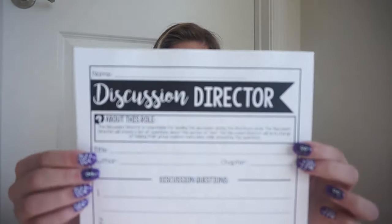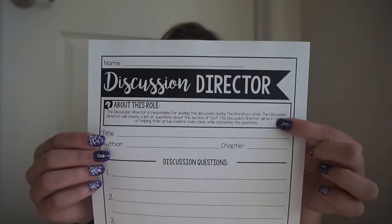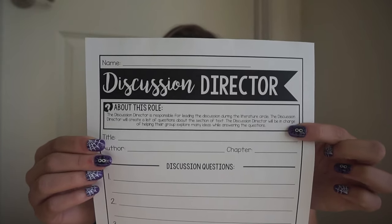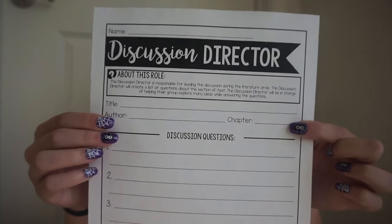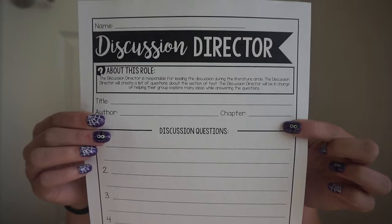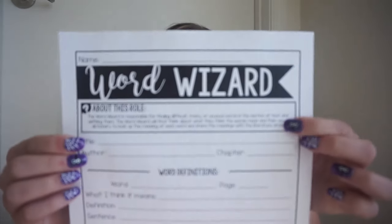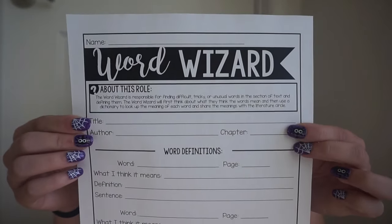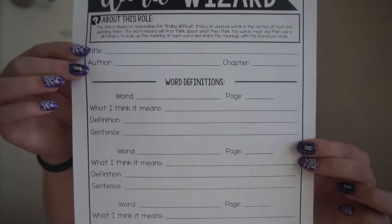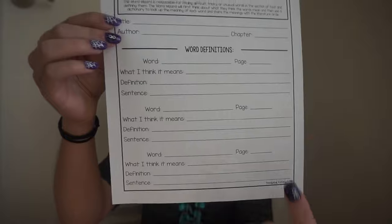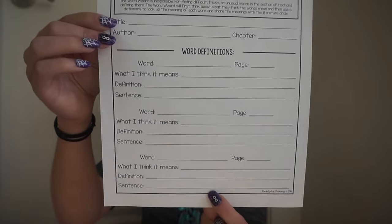There is a response page for each role. For the discussion director, there's a short summary of what the role is responsible for at the top so students can easily access it while working. They write down the title, author, and chapter, and then record their five discussion questions. For the word wizard, same layout — title, author, and chapter at the top, and then they fill out the word, page number, what they think it means, the definition, and use it in a sentence. Students must find at least three words.